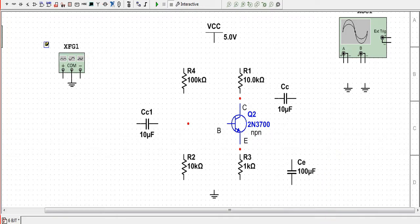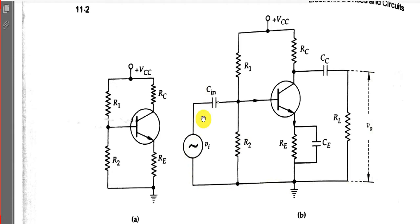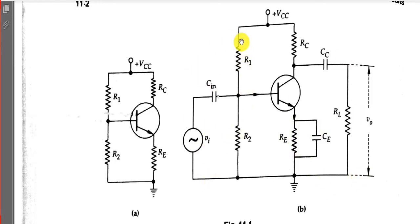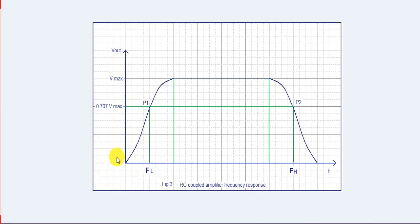Before performing the experiment, let's have a short introduction about the theory. This is the circuit diagram for a single stage RC coupled amplifier. Resistors R1 and R2 provide biasing condition, resistor RE is used for stabilization. Coupling capacitors C_in and CC block DC signals and allow AC signals to pass through. Bypass capacitor CE is connected in parallel to resistor RE. This is a common emitter configuration using voltage divider biasing. AC signals are provided between the base and emitter terminals, and output is taken from the collector terminal.